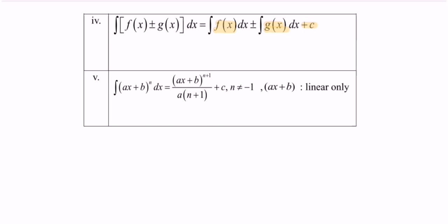Rule number five: integrate (ax plus b) to the power of n with respect to x. The result is (ax plus b) to the power of n plus one, over n plus one, divided by a, plus c. Remember to differentiate the internal function and divide by a. Note that n must not equal negative one, and the function must be linear only.